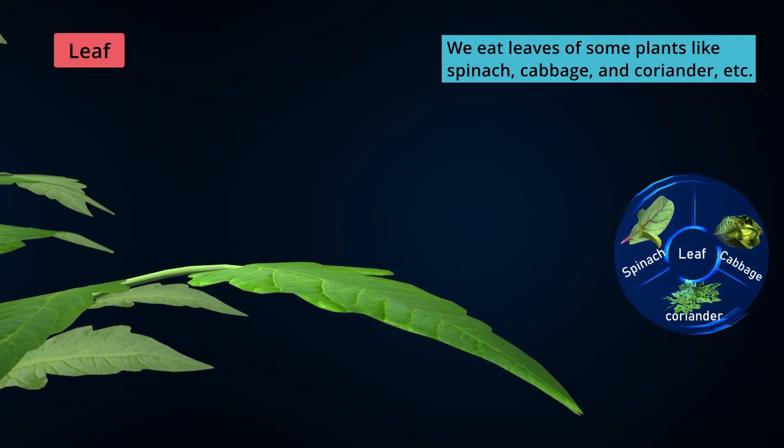We eat leaves of some plants like spinach, cabbage, and coriander.